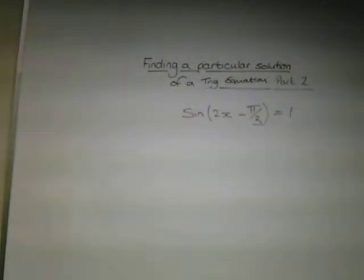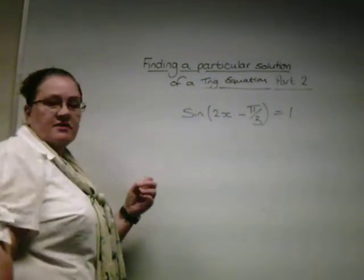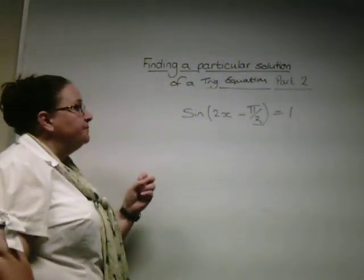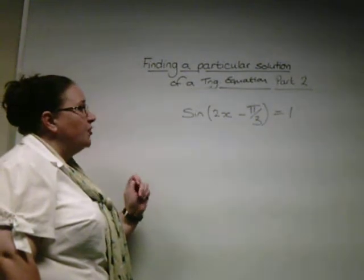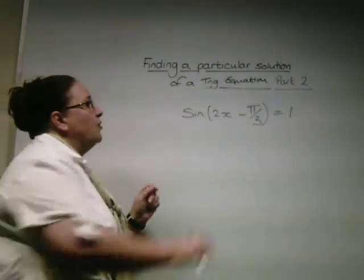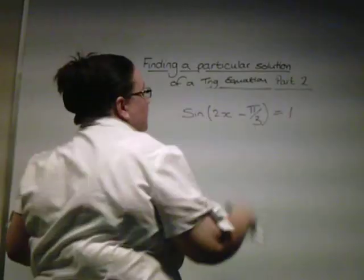Welcome to the second part of finding a particular solution of a trig equation part 2. We're going to look at a slightly more complicated function. This time I've got sine of 2x minus pi by 3 equals 1.